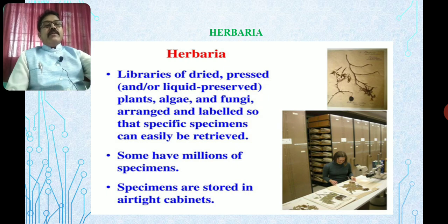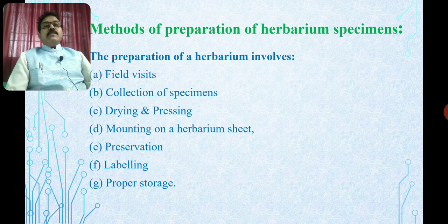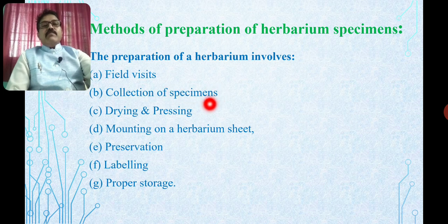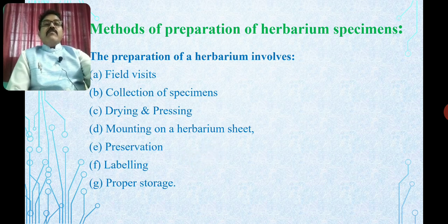There are several methods of preparation of the herbarium specimen. The preparation of the herbarium involves six to seven stages: the first is the field visit, second is collection of the specimen, third is drying and pressing of the specimen, fourth is mounting of the specimen on the herbarium sheet, fifth is preservation of the material, sixth is labeling of the plant material, and seventh is proper storage.